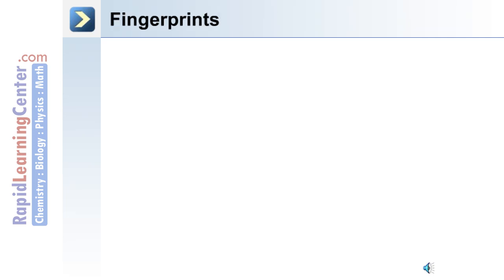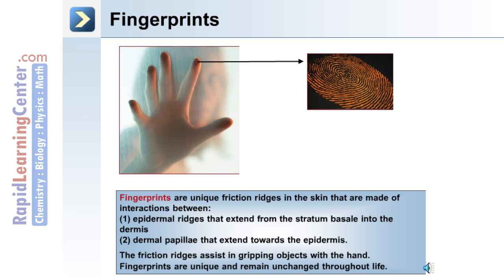The skin also produces fingerprints. Fingerprints are unique friction ridges in the skin that are made up of interactions between two different components: epidermal ridges and dermal papillae. Epidermal ridges extend from the stratum basal into the dermis, and the dermal papillae extend towards the epidermis from the dermal layer. The friction ridges assist in gripping objects with the hand. The fingerprints produced by these friction ridges are unique and remain unchanged throughout life.